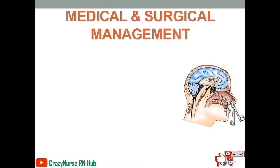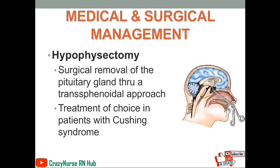Now let's proceed to the medical and surgical management. We have hypophysectomy — a surgical removal of the pituitary gland through a transphenoidal approach, and this is the treatment of choice in patients with Cushing's syndrome. Basically, this procedure is done to remove the pituitary gland.